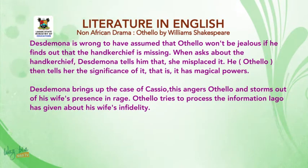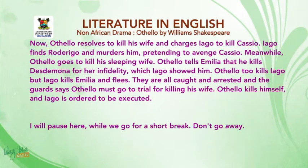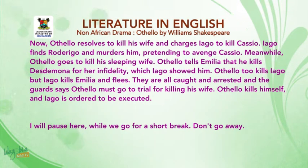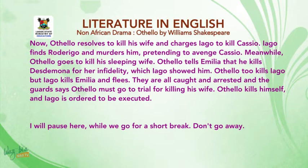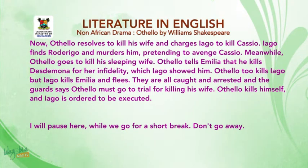Desdemona brings up the case of Cassio, which angers Othello and he storms out of his wife's presence in rage. Othello tries to process the information Iago has given about his wife's infidelity. Othello resolves to kill his wife and charges Iago to kill Cassio. Iago finds Rodrigo and murders him, pretending to avenge Cassio. Meanwhile, Othello goes to kill his sleeping wife. Othello tells Emilia that he killed Desdemona for her infidelity, which Iago showed him. Othello tries to kill Iago, but Iago kills Emilia and flees. They are all caught and arrested, and Othello must go to trial. Othello then kills himself and Iago is ordered to be executed.